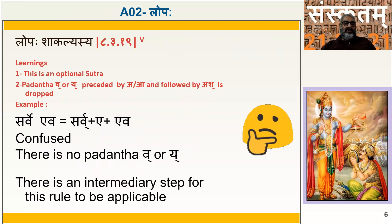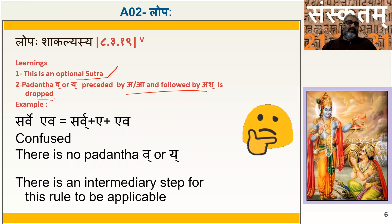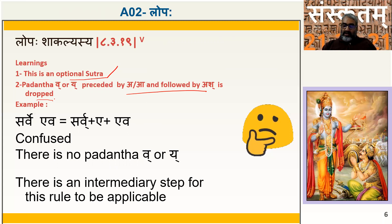So in 'Lopaha Shakalyasya,' the first learning is that this is an optional Sutra because the name Shakalyasya appears. The second rule is: a padanta Va or Ya preceded by A, followed by Ash, is dropped. The words padanta, Yoho, Yawayoho, and Ash are all coming from earlier Sutras via the principle 'adrisham padam sutraantarad anuvartaniyam sarvatra.'